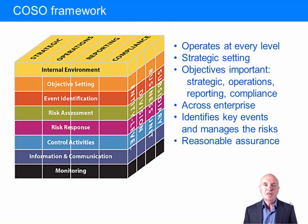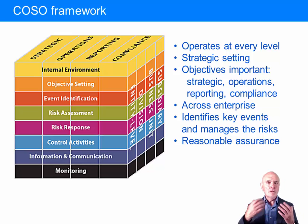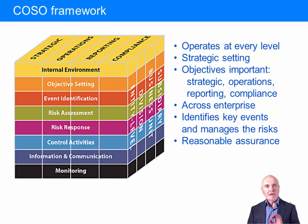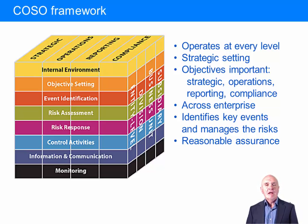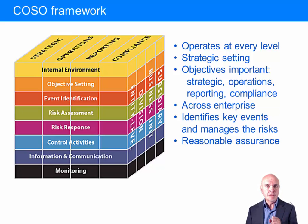The next chapter deals with enterprise risk management — how you can get a system which applies proper risk management to the whole of perhaps a very large organisation. The key to this is this diagram, which shows really in three dimensions all the little areas where you have to apply risk management: risk identification, risk management and response to it.